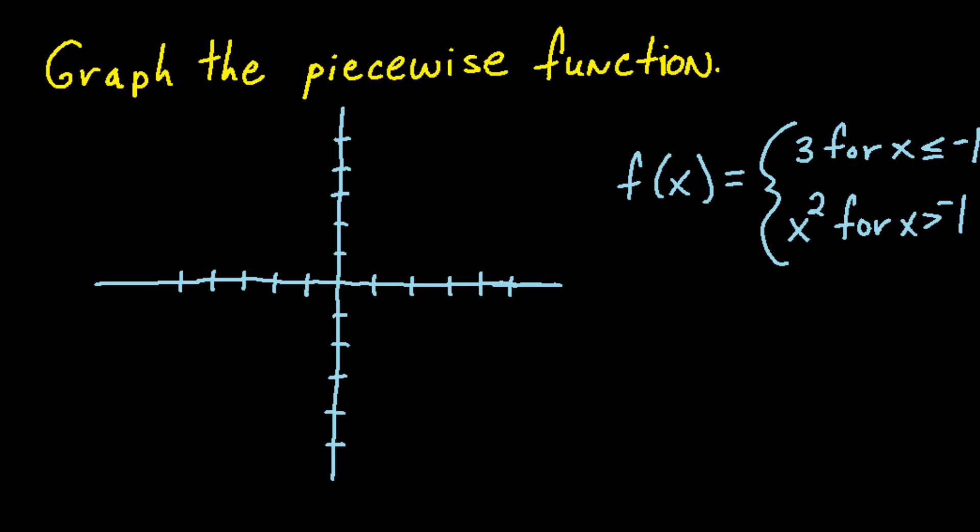This next question wants us to graph the piecewise function. f(x) has two pieces. One is f(x) equals 3 for the values x is less than or equal to negative 1, and the other one is f(x) equals x squared for the values x greater than negative 1. Since f(x) essentially means y, we need to graph two pieces, y equals 3 and y equals x squared.